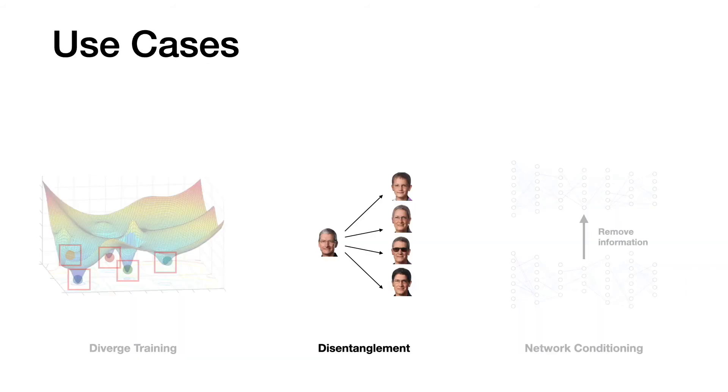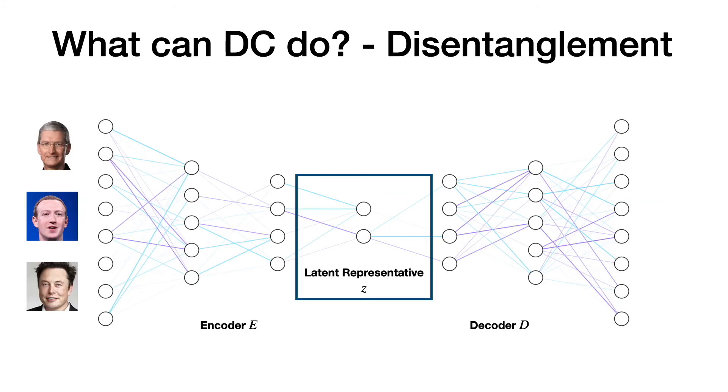Let us consider another use case, disentanglement in the latent space. For the encoder-decoder model, we can encode the input images into the latent space and then recover it back. In the latent space, we can ask that those two nodes to be independent. More precisely, we can ask that one node representing the attribute of interest, like age, and another node representing the residual information should be independent. This is called disentanglement.